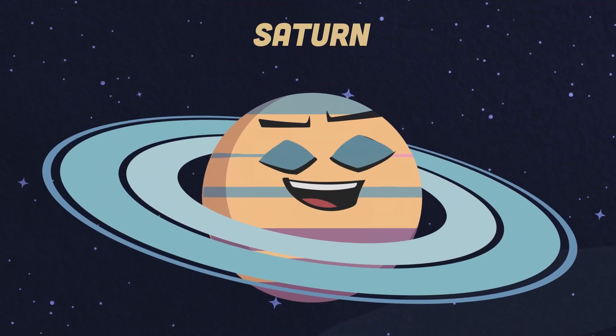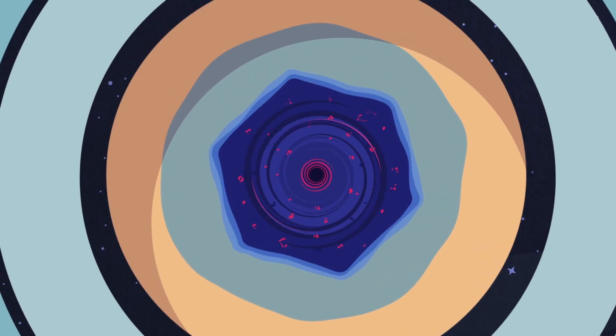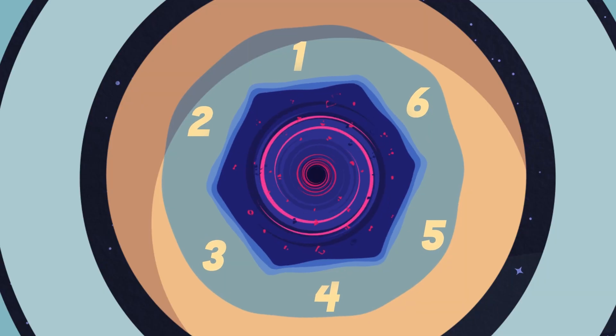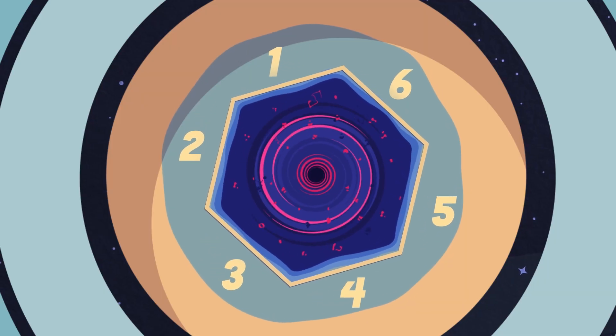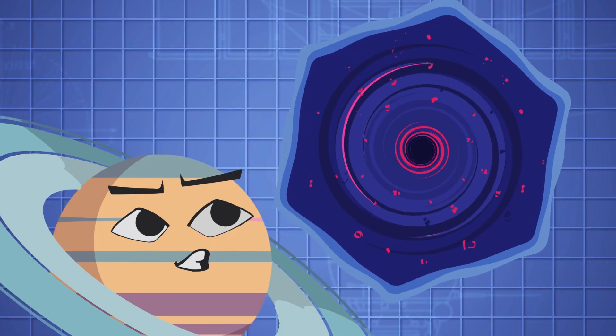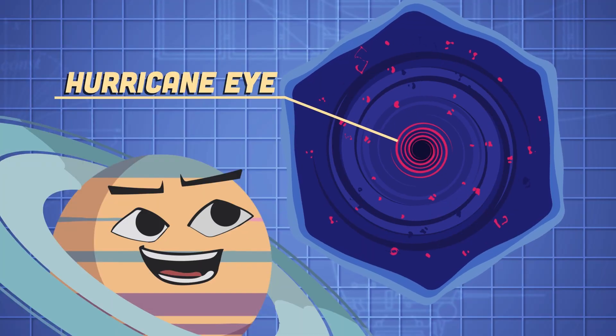In Saturn's North Pole, there's something strange going on. There's a six-sided jet stream shaped like a hexagon. The six-sided hexagon storm has a hurricane eye at the center which looks like a hole.